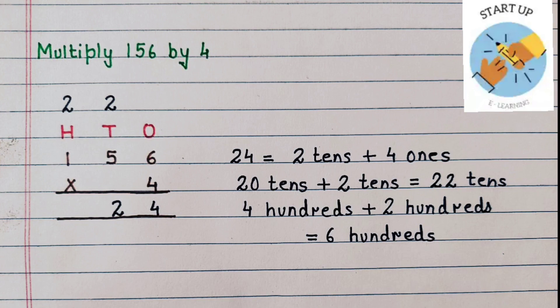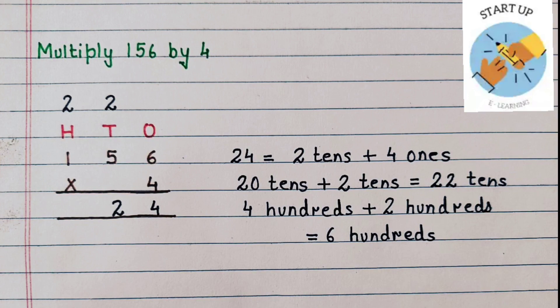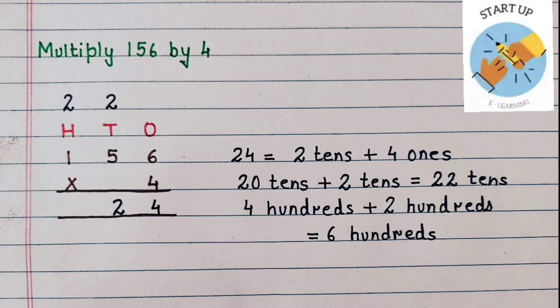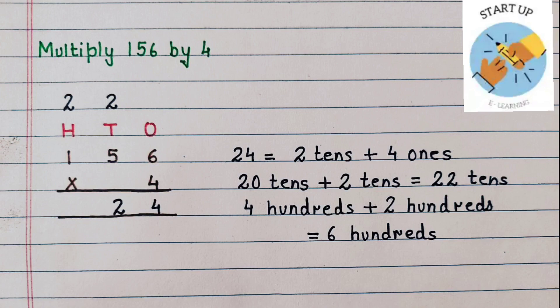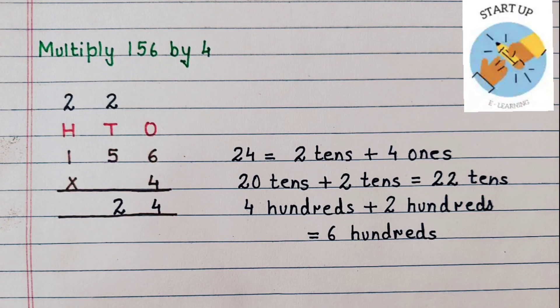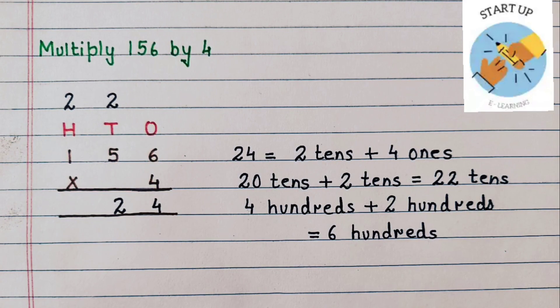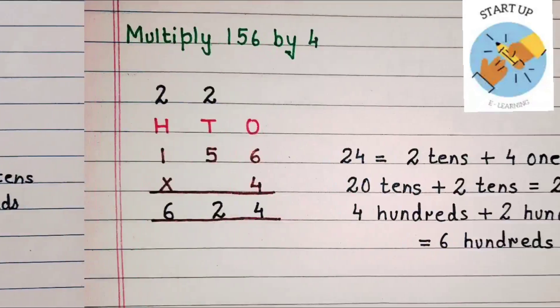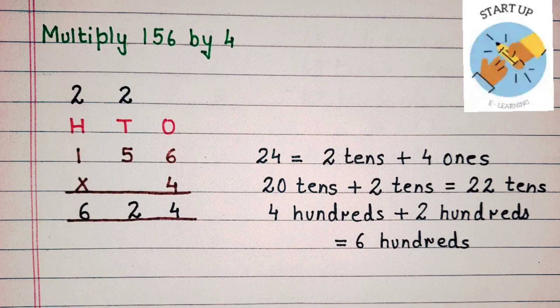Now let's multiply 4 by the digit at the 100's place. 4 ones are 4, plus 2 carry over. 4 hundreds plus 2 hundreds is equal to 6 hundreds. This 6 will be written under 100's place. So the product of 156 and 4 is 624.